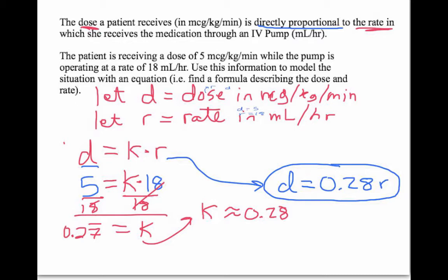This is now a formula I can use to answer questions about the dose and the rate. For example, if the patient stabilizes at a rate of 30 milliliters per hour, I can plug that in for R and solve for the dose. That's a summary: I know the dose and rate are directly proportional, and using one known instance — dose of 5, rate of 18 — I found the constant of variation and created a specific formula.